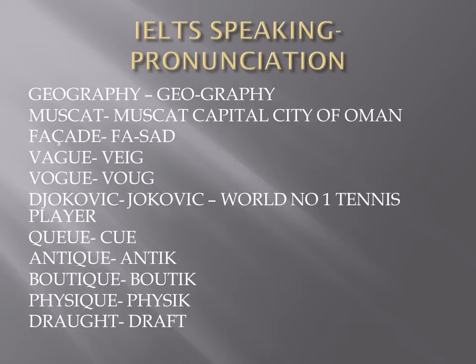The first word is 'geography.' Normally in the Asia-Pacific region, people say 'geography class' — it's actually pronounced 'geography.' There is also a beautiful city in the Gulf area, located in the country of Oman. The capital of Oman is called Muscat.